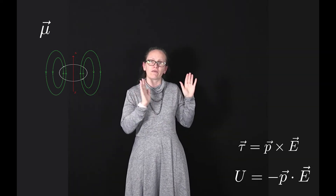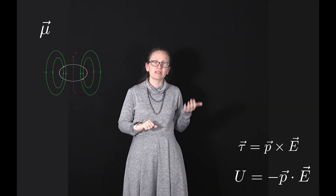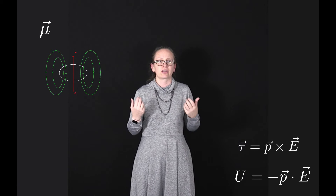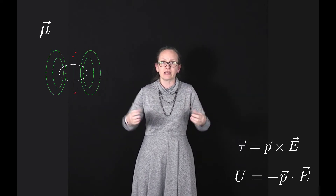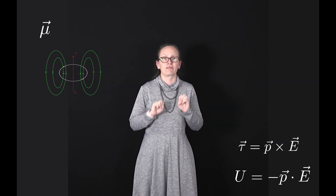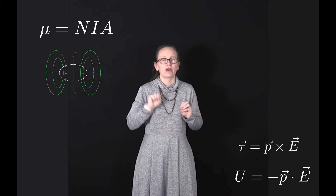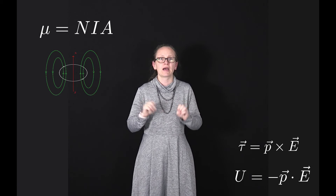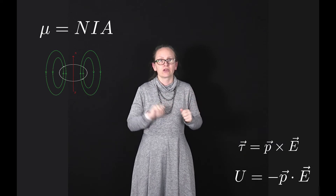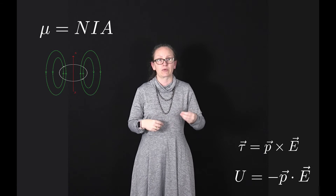To work out the direction of a magnetic dipole moment we use the right-hand screw rule. If we point our thumb in the direction of the current, our fingers wrap around to show the direction of the magnetic field, which is the same as the direction of the magnetic dipole moment. The magnitude of the magnetic dipole moment is given by n times i times A, where n is the number of turns, i is the current through the loop, and A is the area within the loop. The units for magnetic dipole moment are meters squared amps.